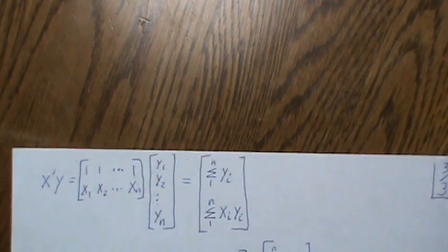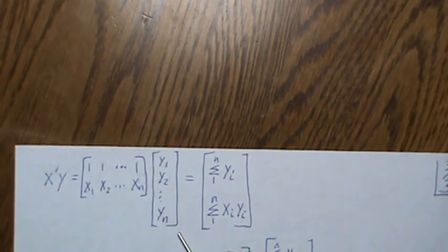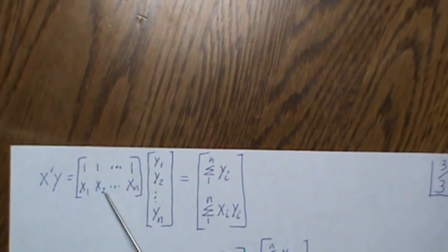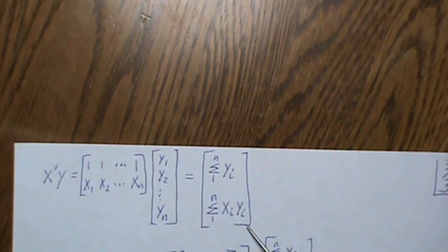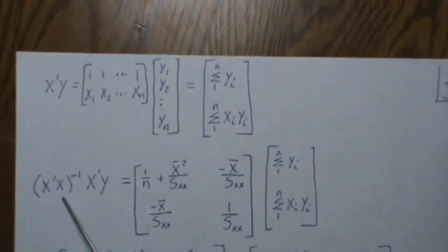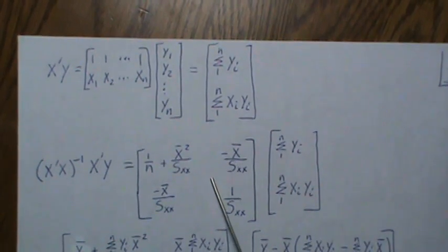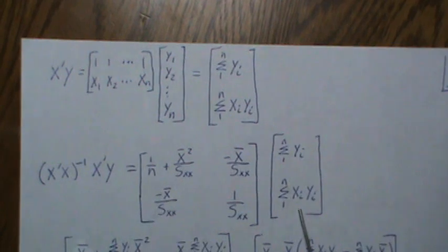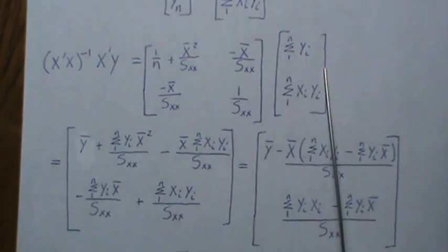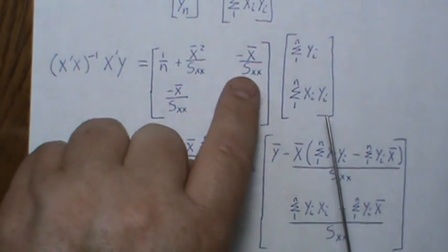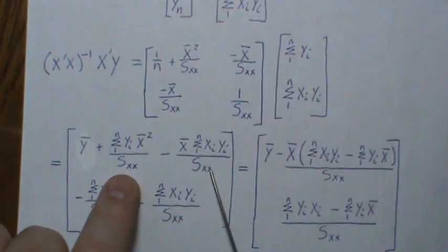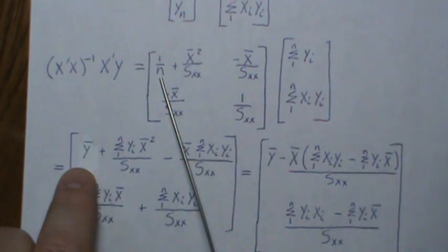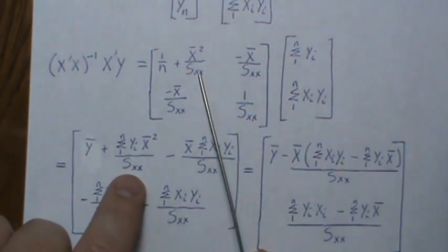Following the calculations, we need to compute X-transpose times y. X-transpose times the y vector: taking the first row times the y column gives the sum of yi, and the second row times the y column gives the sum of xi times yi. So X'y is the vector [sum yi, sum xi*yi].